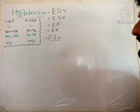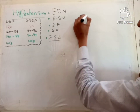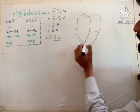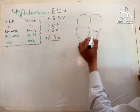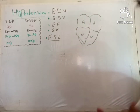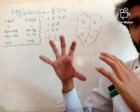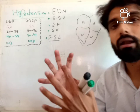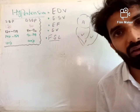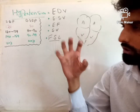End diastolic volume — the word indicates the blood volume present in the ventricle at the end of diastole, like when the heart has been completely relaxed. After complete relaxation, the amount of blood that is present in the ventricle is called end diastolic volume. Or we can say the amount of blood present in the heart just before contraction.